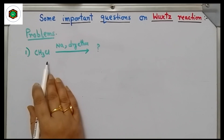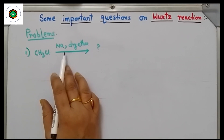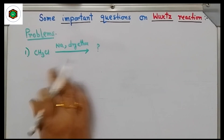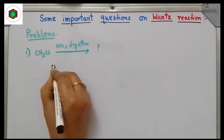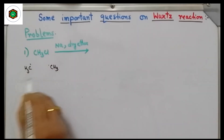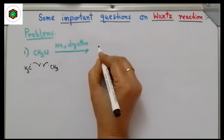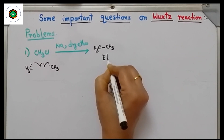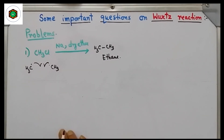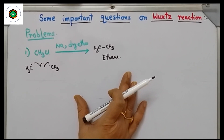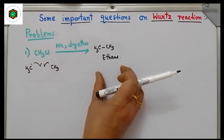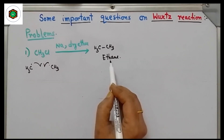First problem: methyl chloride (chloromethane) treated with sodium metal in dry ether — what is the product? This is Wurtz reaction. Two methyl radicals will generate and combine to form ethane. Mechanism has been discussed already. Methane cannot be prepared by this method because when two methyl radicals combine, ethane is formed — we always get the higher homolog.